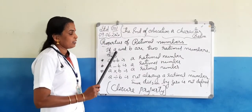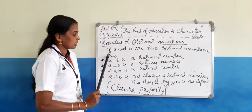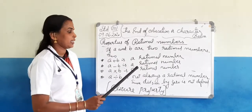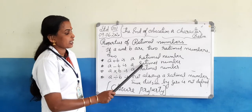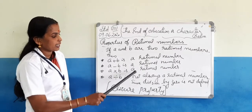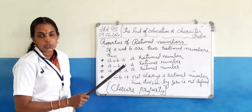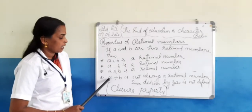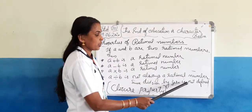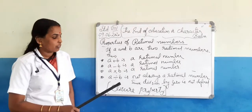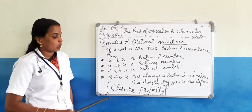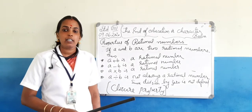To summarize: if A and B are two rational numbers, then A plus B is a rational number (closed under addition), A minus B is a rational number (closed under subtraction), A into B is a rational number (closed under multiplication). But A divided by B is not always a rational number since division by 0 is not defined. Except for 0, for other rational numbers, A divided by B is also a rational number. This is called the closure property of rational numbers.